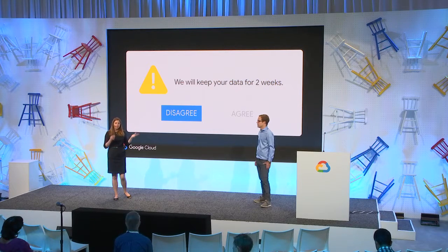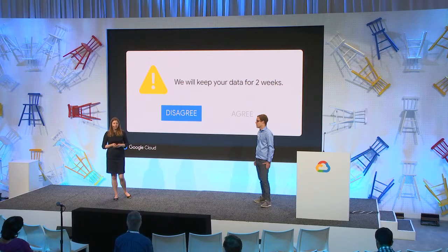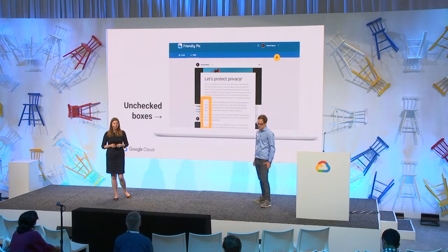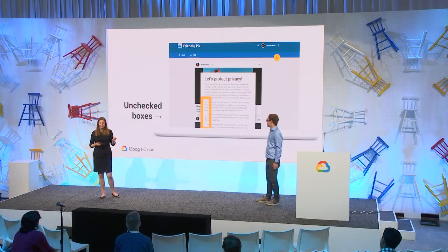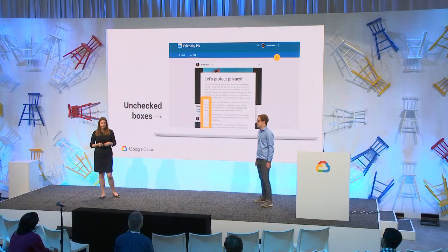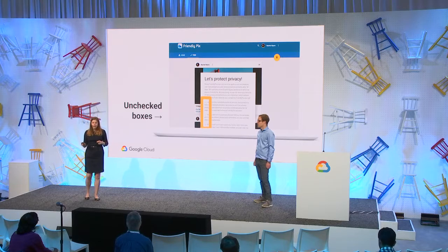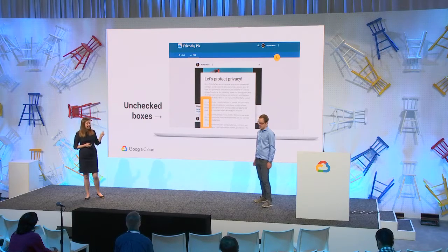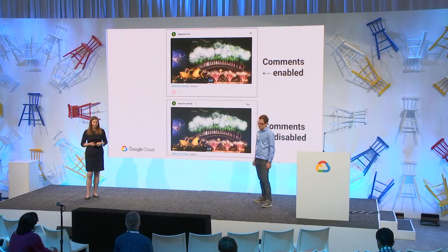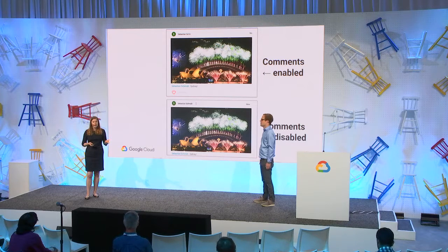Now that we understand the data Google retains and the data you need to support your features, let's talk about how to inform users and give them the information needed to make meaningful decisions. In Friendly Pix, we've added a notice to let users know what kind of data is being saved and what features that data supports. This notice gives them a choice to save that data or disable that feature — features are only enabled for users that actively opt in. For example, if a user doesn't want us to share their social data, we remove the ability to add comments altogether.